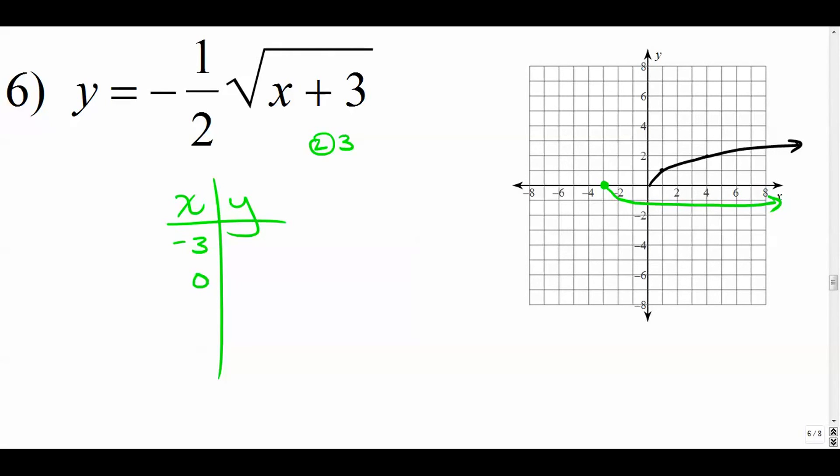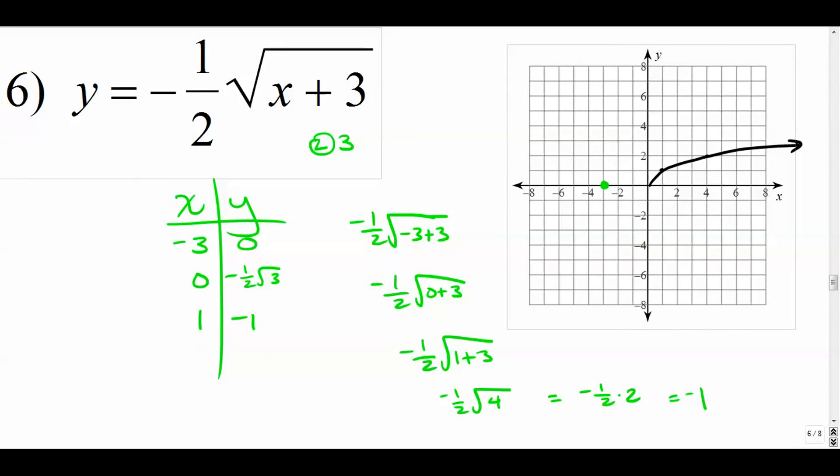Maybe I'll plug in negative 3, I'll plug in 0, and maybe I'll plug in 1. So if I get negative 3, when I plug in negative 3 into this thing, I get negative 1/2 square root of negative 3 plus 3, which is, of course, the negative 1/2 times 0, the square root of 0 is just 0. But when I plug in 0 here, I get negative 1/2 square root of 0 plus 3. So it's negative 1/2 times the square root of 3. It's not a very easy number, but I chose this one because it is. When I plug in 1 for x, negative 1/2 times the square root of 4 is negative 1/2 times 2, which is negative 1. So (1, -1) is a point.